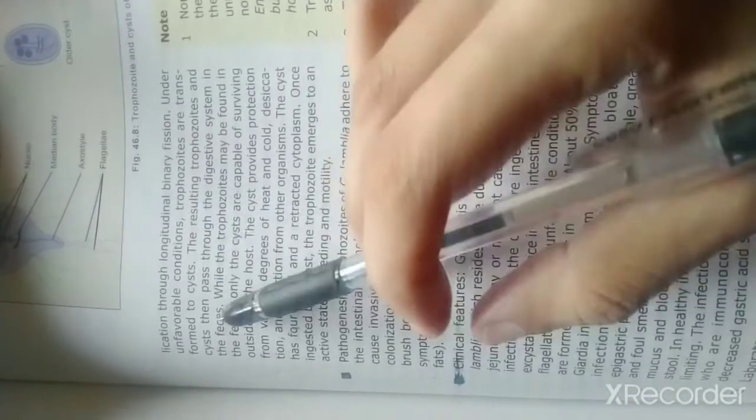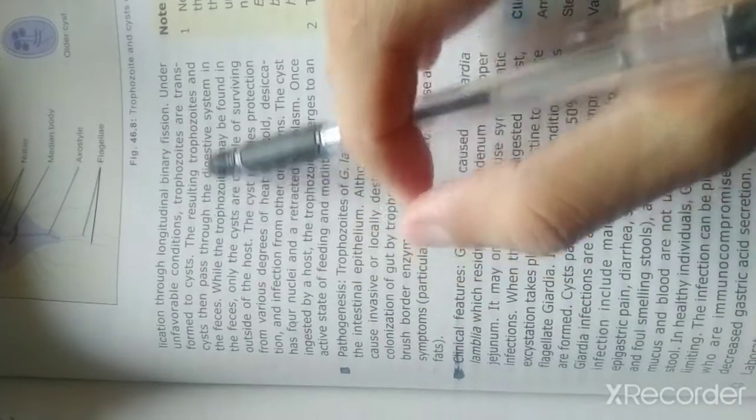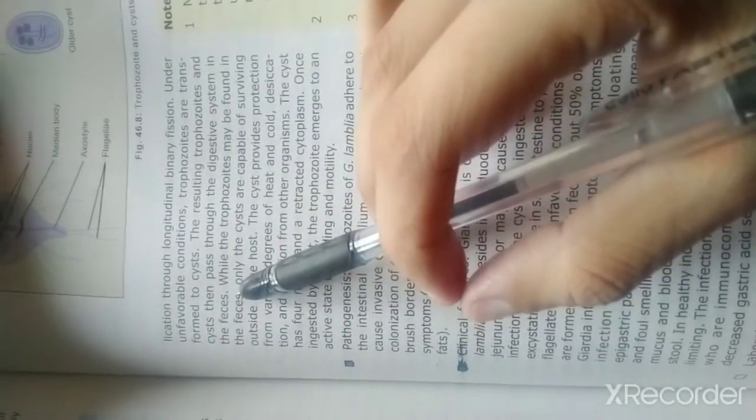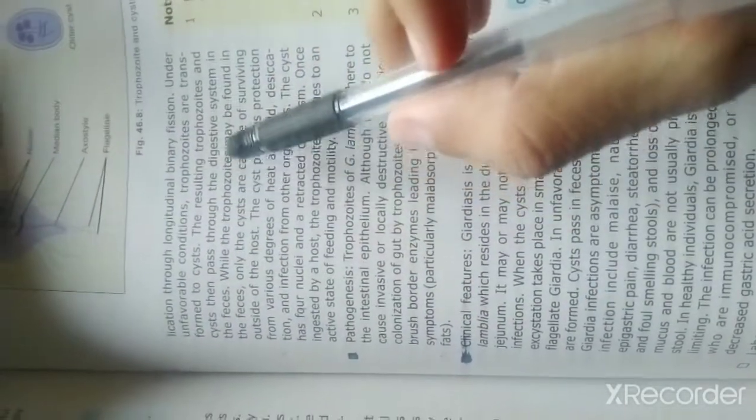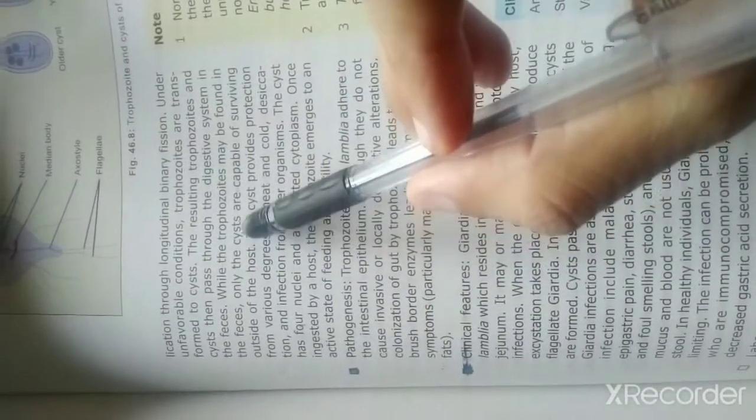The resulting trophozoites and cysts then pass through the digestive system in the feces. While trophozoites may be found in the feces, only the cysts are capable of surviving outside of the host.